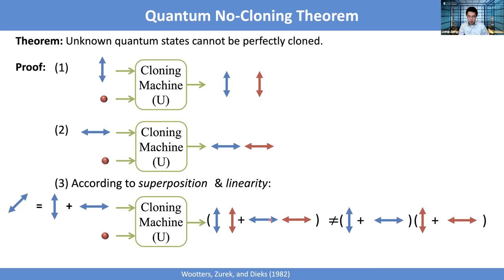This state is different from two copies of a 45-degree polarization photon — on one side you have four different combinations while on the other you only have two. So it's not the same. With these three lines, you can show that you cannot perfectly clone unknown quantum states. You cannot simultaneously make all three cases consistent.